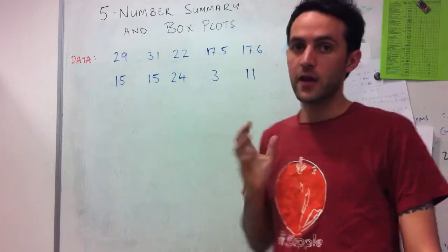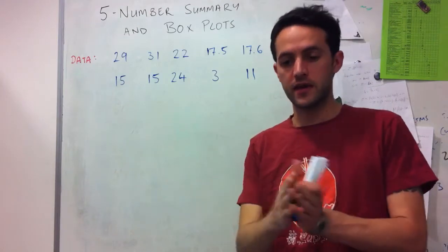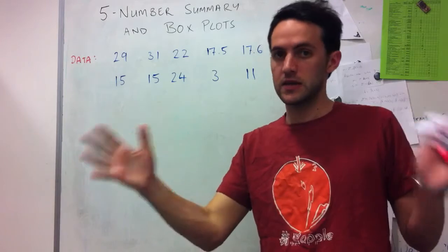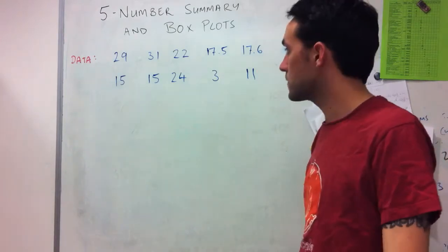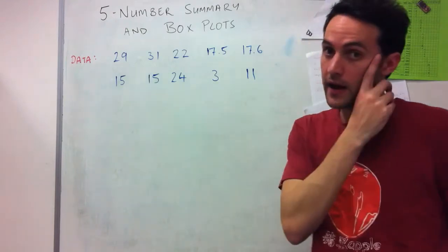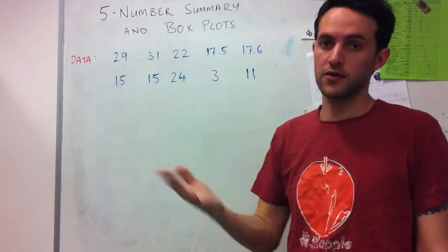So to create the five-number summary, which is basically our summary statistics that revolve around the median, the first thing that I do is order the data either from highest to lowest or lowest to highest.